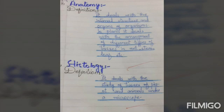Morphology also deals with the arrangement of different types of tissues in root, stem, leaves, and organs of organisms. Next, our side heading is Histology. Write down its definition: it deals with the study of tissues of plants and animals under a microscope.